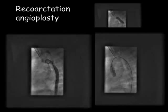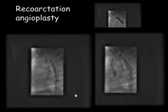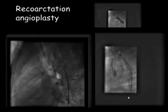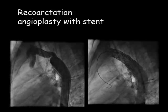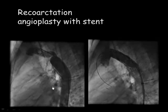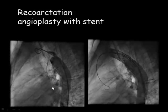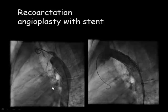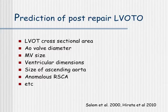Here's a patient of ours with significant narrowing distal to the left subclavian artery. There was a slight waist in the balloon, but no residual gradient after balloon dilatation of this lesion. Here's another patient of ours with residual re-coarctation of the distal arch treated with stent implantation.